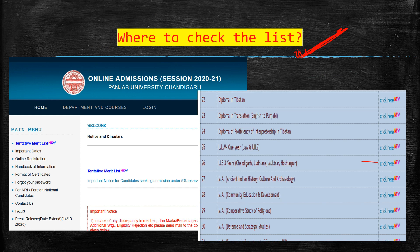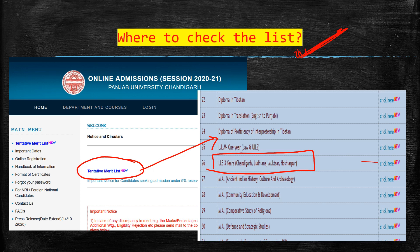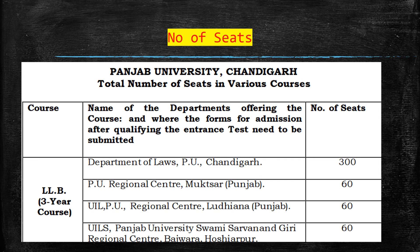Where to check the list: you can check it on the online admissions website — I'll give you the link in the description box. If you click on the tentative merit list, go to LLB 3 years, and you can check your rank there.